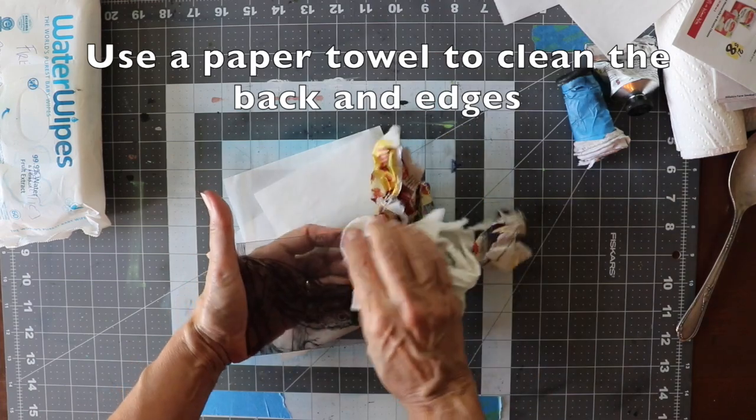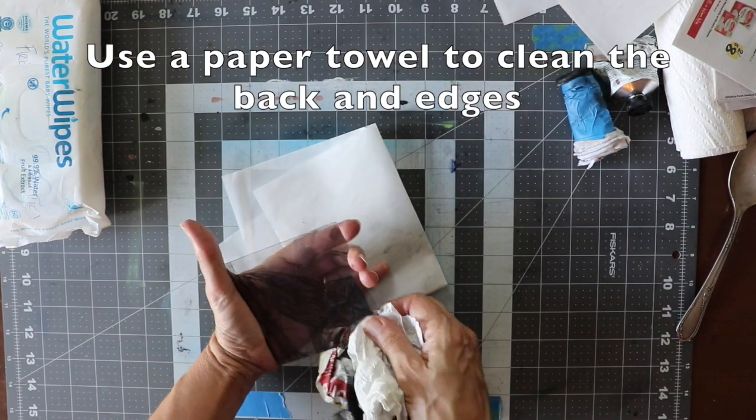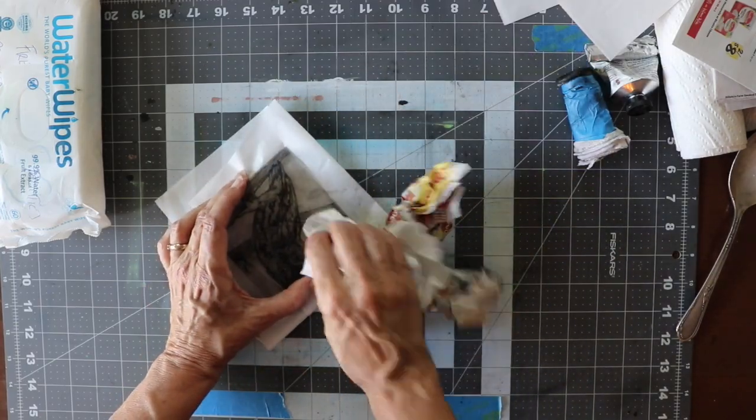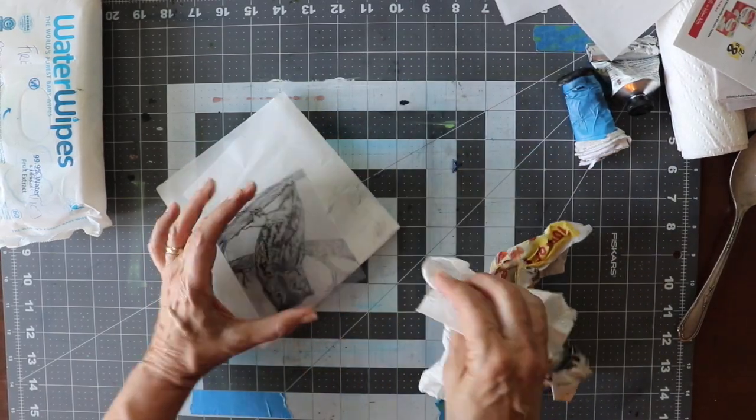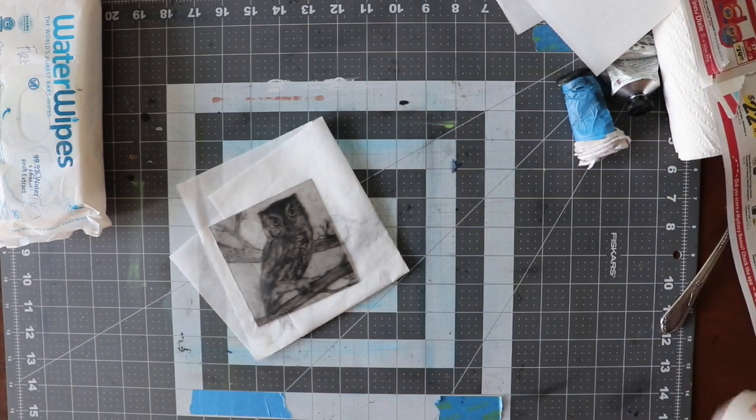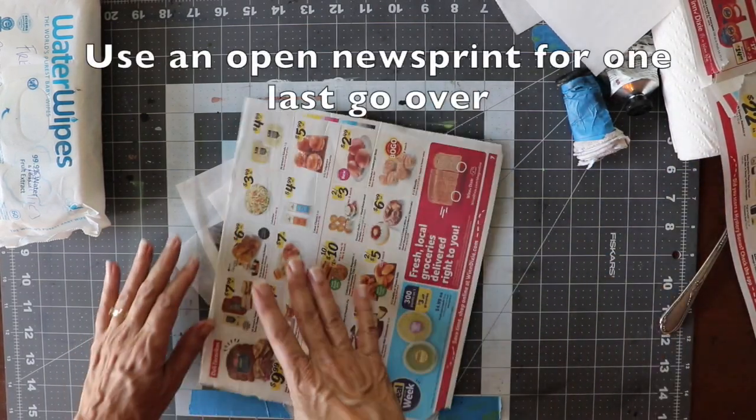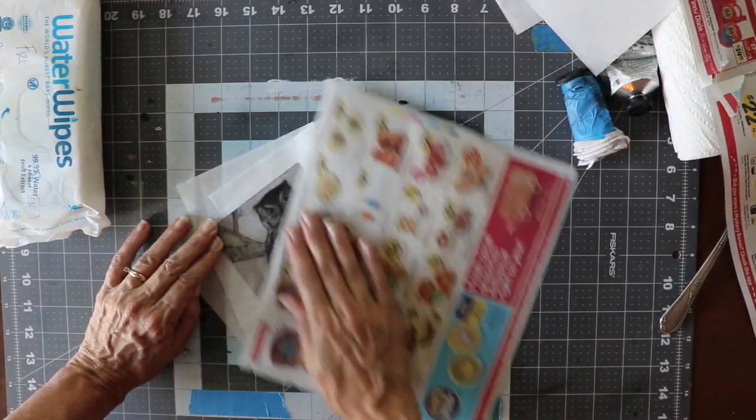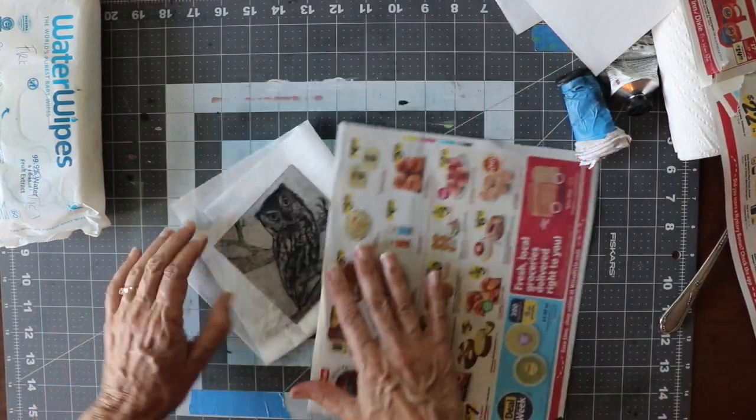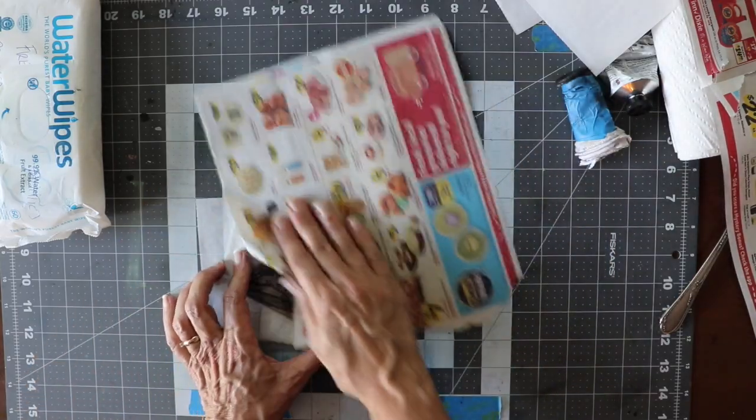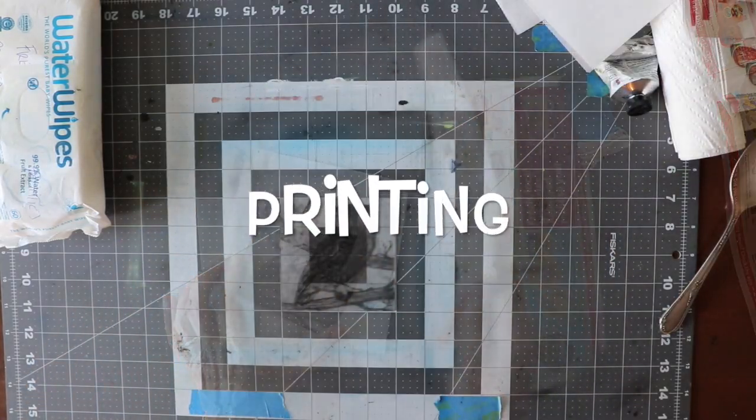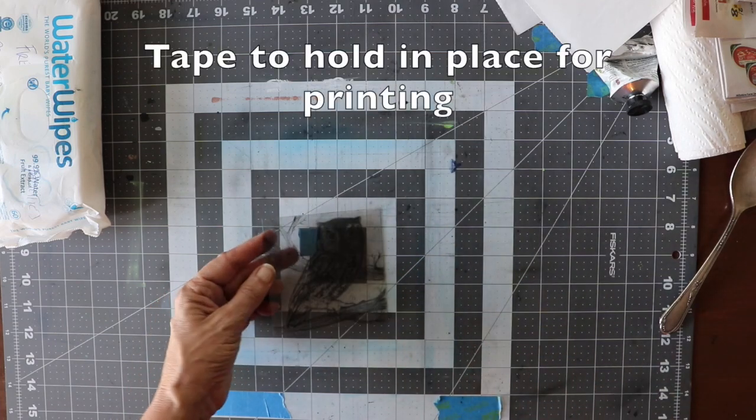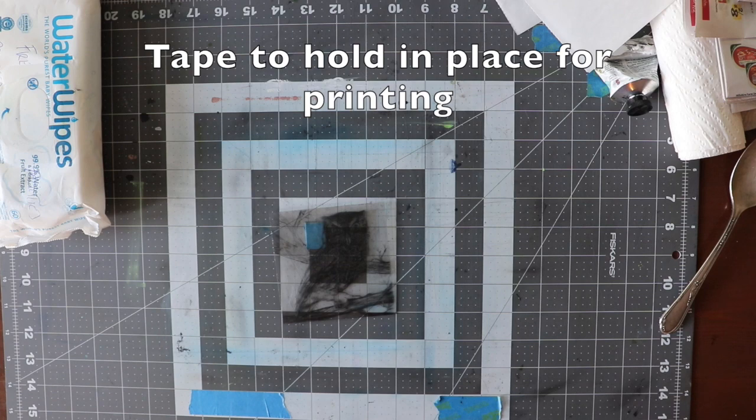I use a paper towel to clean the edges on the back of my plate. I use an open sheet of newsprint to give it one last pass before we go to print. Center your plate in your printing area and tape it down to prevent shifting while it's being pressed.